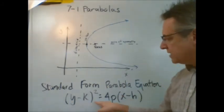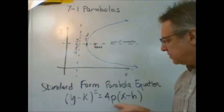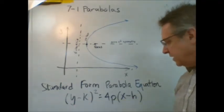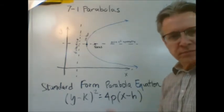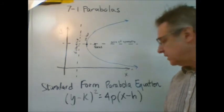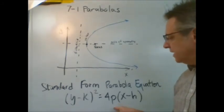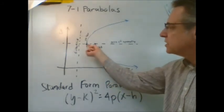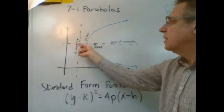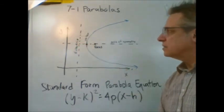y minus k squared equals 4 times p times x minus h. Now, we know the y minus k and the x minus h part from when we studied parabolas previously. The p here is the distance between the focus and the vertex, which is also going to be the same distance from the vertex to the directrix.